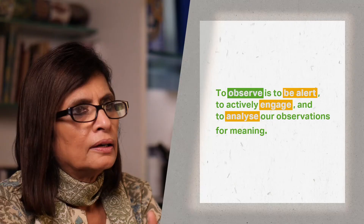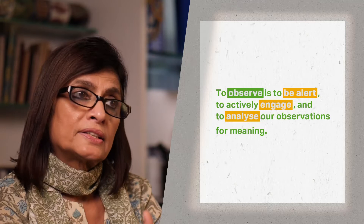For ethnographers, observation is different from the seeing or looking around which we do almost without thinking. To observe is to be alert, to actively engage with what we are looking at and to try and make sense of it. Seeing, on the other hand, is perhaps a more passive activity which requires less effort, where we are looking at something but may not be trying to understand it.